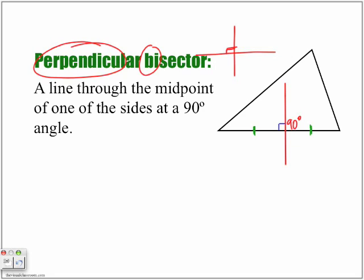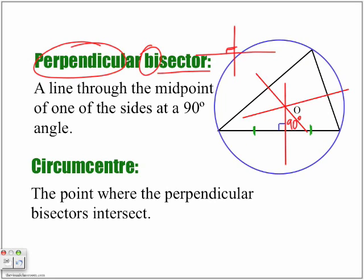The circumcenter is the point where the perpendicular bisectors intersect. We draw perpendicular lines to the midpoint of each side — hash marks confirm the two halves are equal — and where all those perpendicular bisectors cross, that single point is the circumcenter.